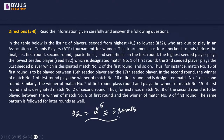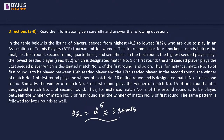In the second round, the winner of match 1 of round 1 plays the winner of match 16 of round 1 — designated match 1 of round 2. Similarly, the winner of match 2 plays the winner of match 15 of round 1. Match 8 of the second round is between the winner of match 8 and the winner of match 9 of round 1. The same pattern is followed in later rounds.